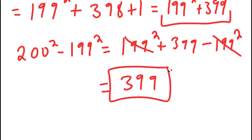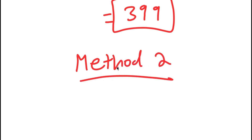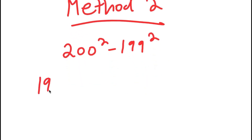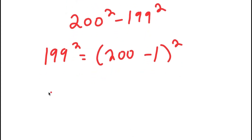For method number two, my problem was 200 squared minus 199 squared. For this method, what I'm going to do is rewrite 199 squared as 200 minus 1, quantity squared. In our first method, we wrote 200 squared as 199 plus 1 squared. This time we're rewriting 199 squared as 200 minus 1 squared.